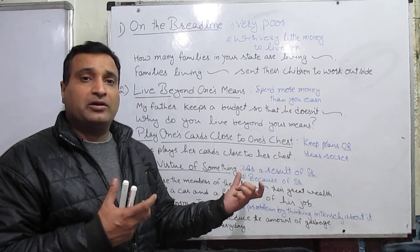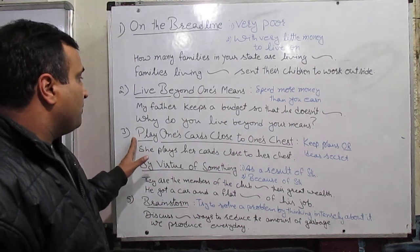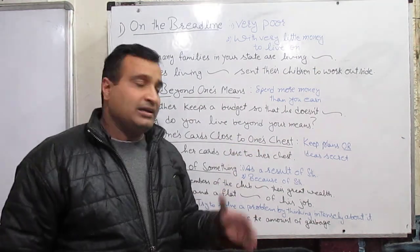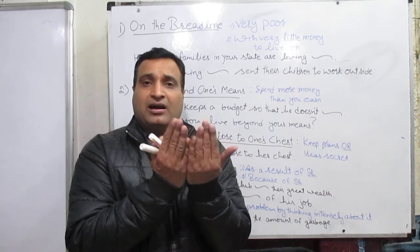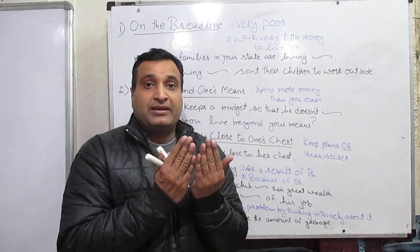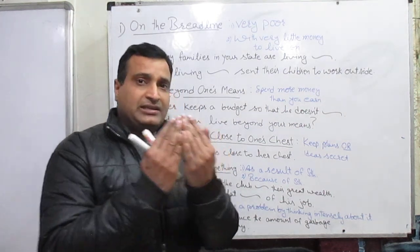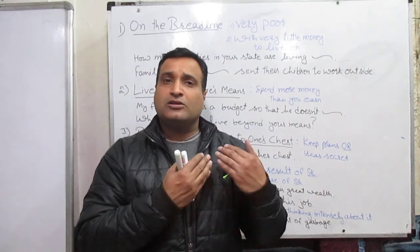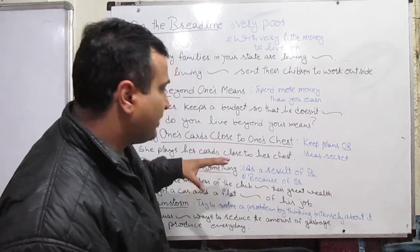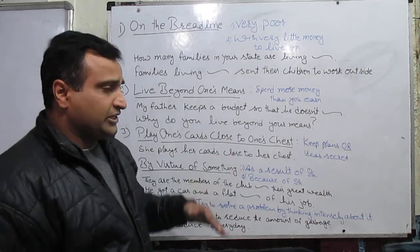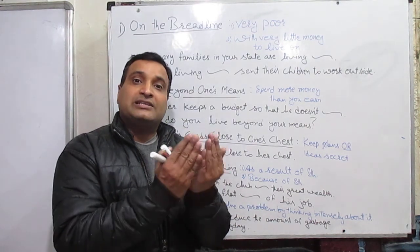Third example: 'play one's cards close to one's chest' — it means to keep your plans or ideas secret. When we play cards, we keep them very close to our chest so that somebody may not see them — we want to hide from others. Similarly, when we have secrets, we keep them close to our chest or close to our heart. For example: 'She plays her cards close to her chest' — she keeps her plans and ideas secret.